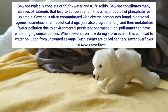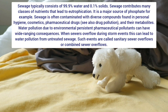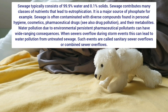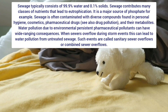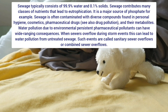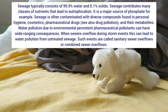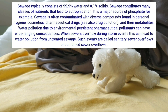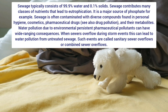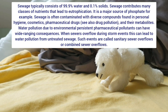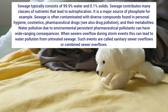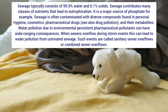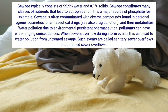Sewage typically consists of 99.9% water and 0.1% solids. Sewage contributes many classes of nutrients that lead to eutrophication and is a major source of phosphate. Sewage is often contaminated with diverse compounds found in personal hygiene, cosmetics, pharmaceutical drugs, and their metabolites. Water pollution due to persistent pharmaceutical pollutants can have wide-ranging consequences. When sewers overflow during storm events, this can lead to water pollution from untreated sewage, in events called sanitary sewer overflows or combined sewer overflows.